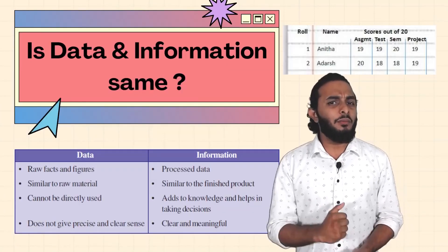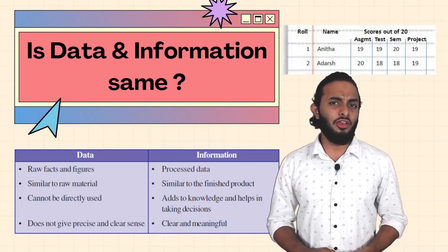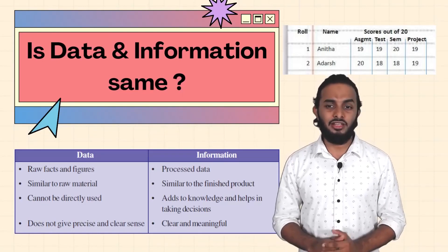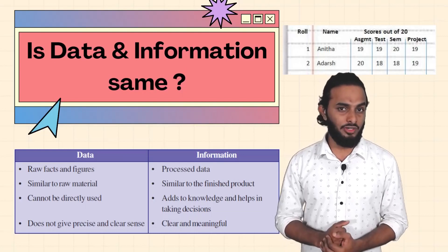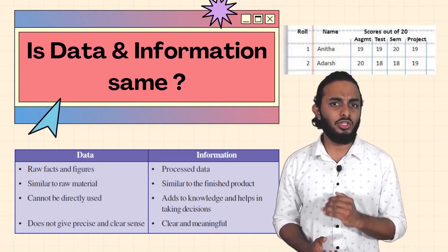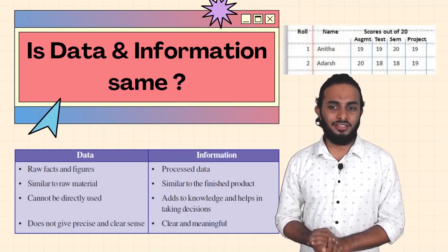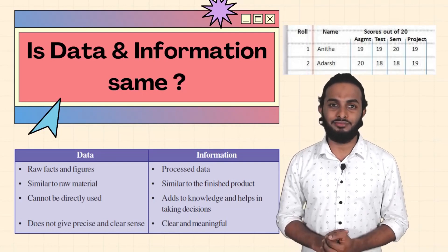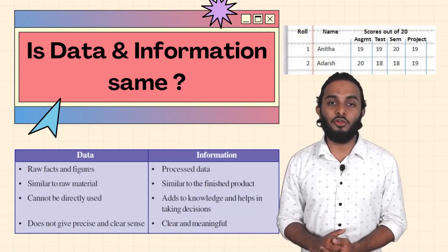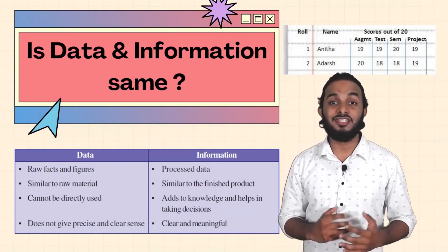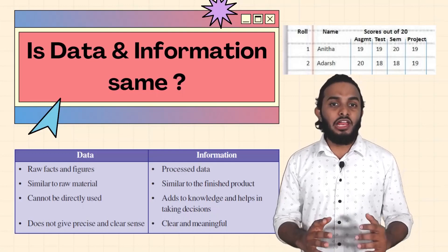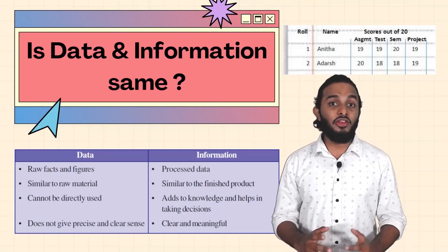Data and information are not the same. For example, here is a mark list — there is a role number, name, and marks: assignment, test, sem, project, and separate marks. This is an arrangement in a particular order. So here is information.